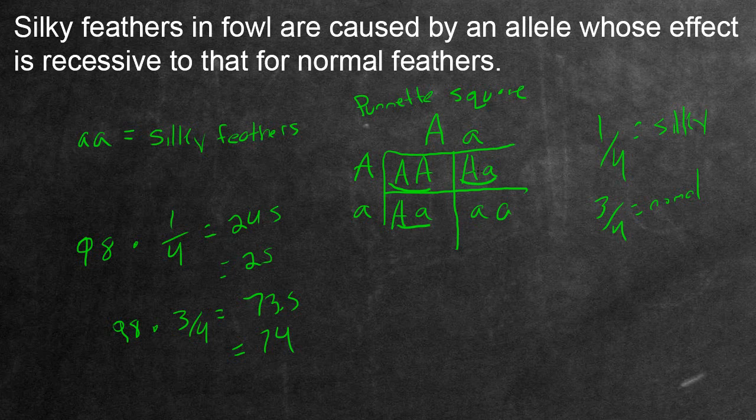So that told us that one fourth, because there's four possibilities, and it's the only one that would give you silky, one fourth equals being silky. The rest are going to give you normal, so three fourths would be normal. Then we multiplied this proportion by the total number of progeny, which was 98, and you got the respective proportions, or amounts, of each type of bird, either silky or normal.